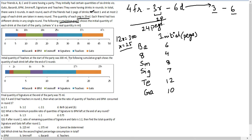The following cumulative graph — again, it's a cumulative graph — shows the quantity of each drink left after the end of 3 rounds. Recording the final quantities: 1, 1, 4, 3, 8, and 6.